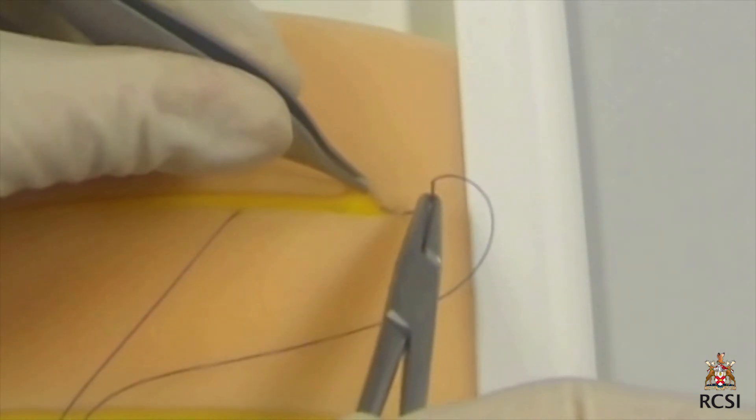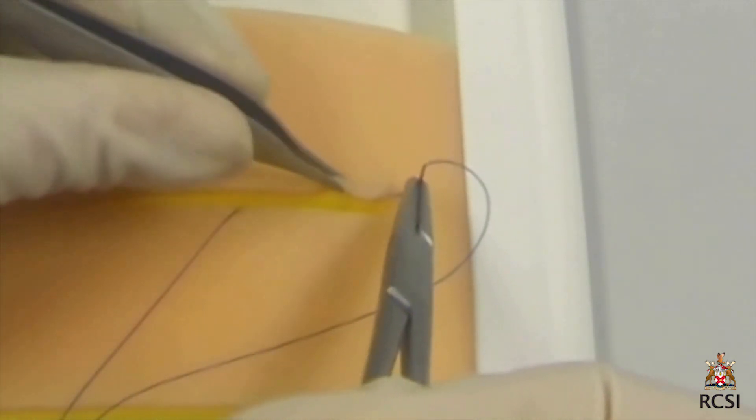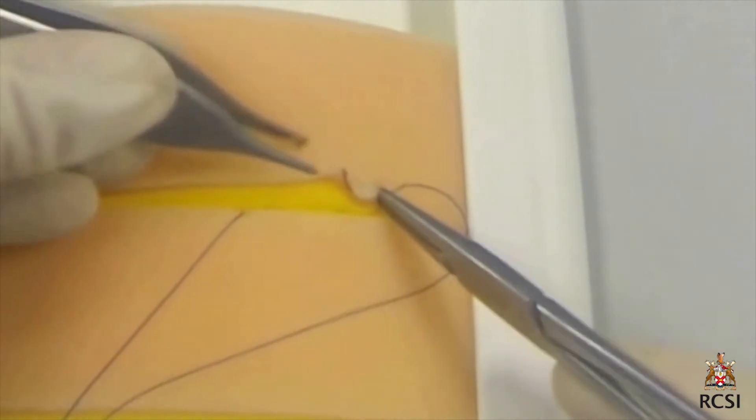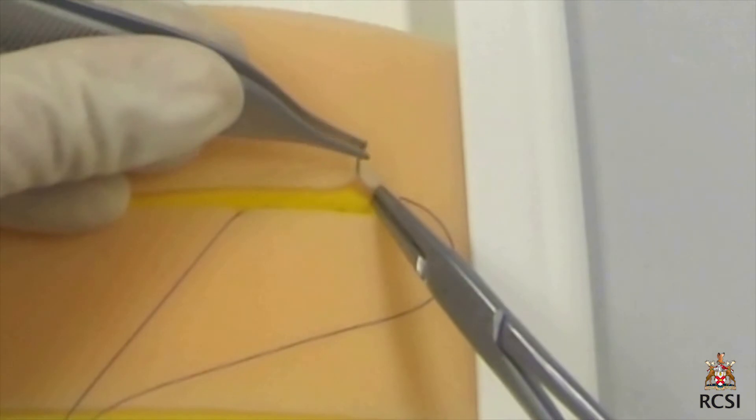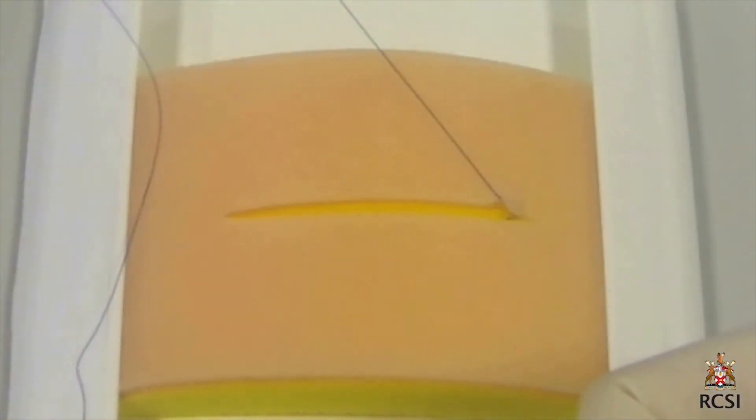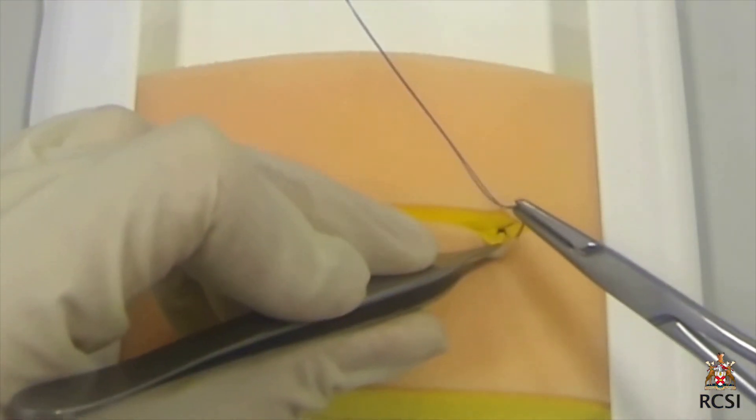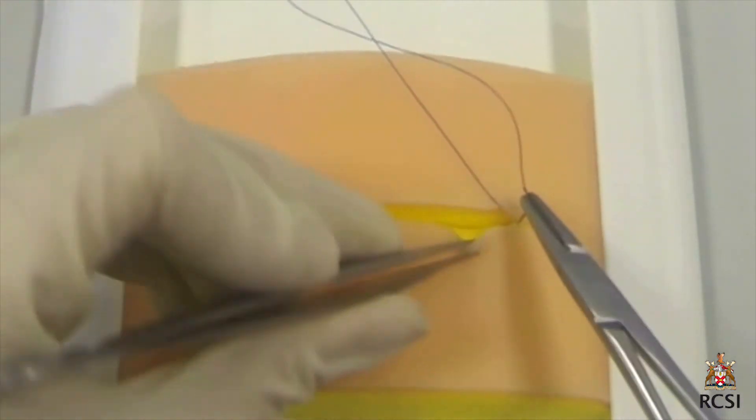The closure is now started by bringing the needle back to the apex of the wound. The needle is inserted into the mid dermis and a c-shaped bite is taken through the dermis for about 5mm. The needle is then inserted into the dermis on the other side of the wound directly opposite where the last bite exited on the other side.